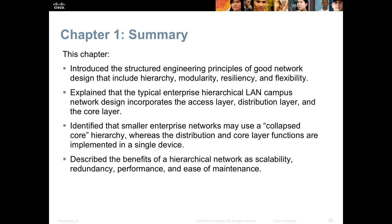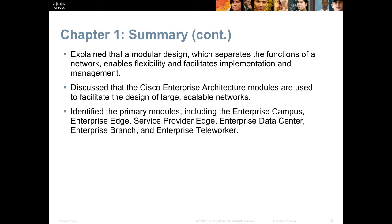In summary, this chapter introduced the structured engineering principles of good network design. We explained that the typical enterprise hierarchical campus LAN has three layers, and that smaller networks may use a collapsed version with only two layers. We described the benefits of a hierarchical network as being scalable, redundant, performance-oriented, and having ease of maintenance. We explained that a modular design separates the function of a network into separate functionality-based modules. We discussed the Cisco enterprise architecture modules and identified the primary ones: service provider edge, campus edge, enterprise campus, data center, branch, and teleworker.